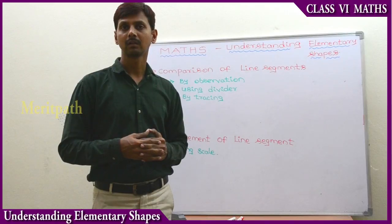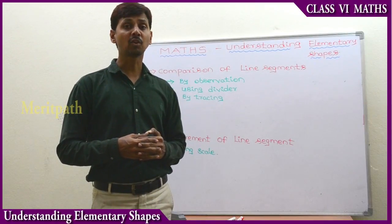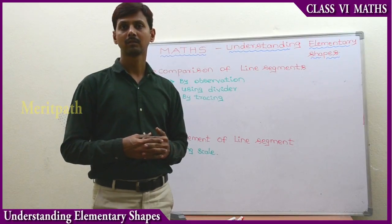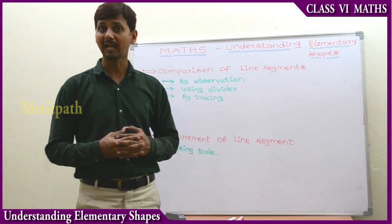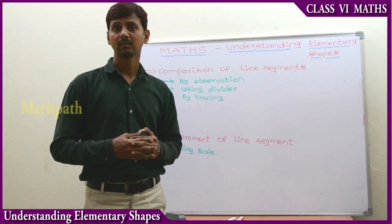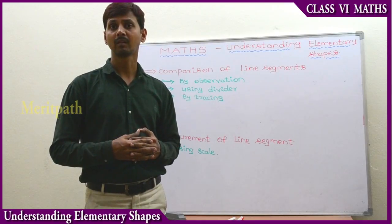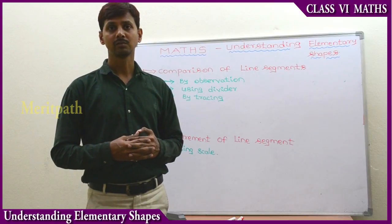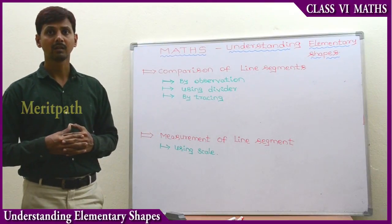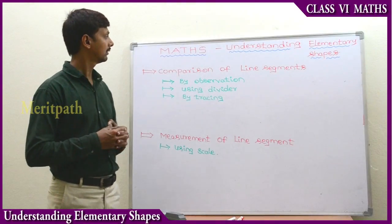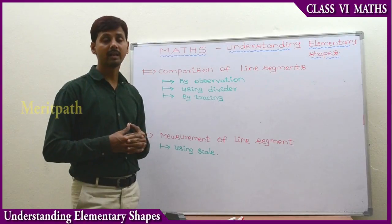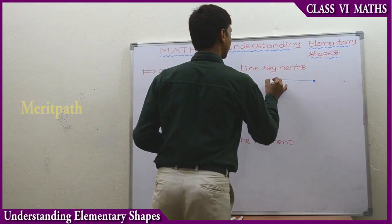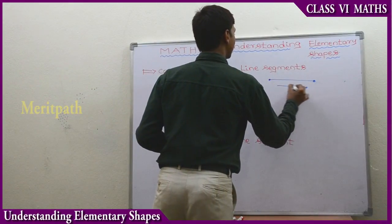A straight path that goes endlessly in both directions is called a line, and a part of a line is called a line segment. A line segment can be measured using meters, centimeters, and millimeters. To measure a line segment we have different methods. We can see the line segments and compare them.